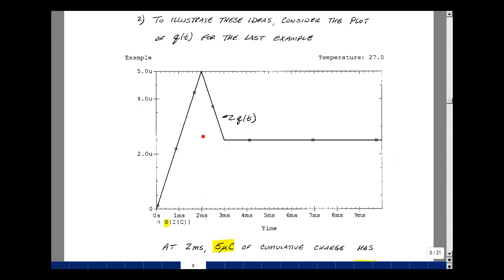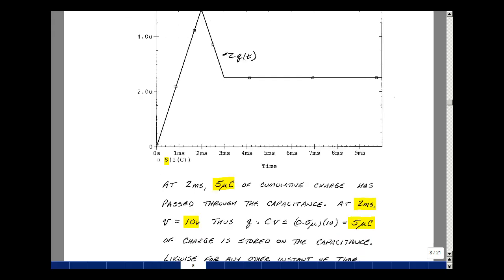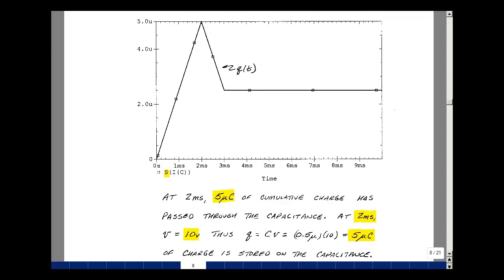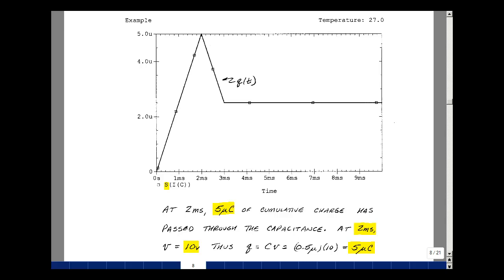At two milliseconds it says that I have five microcoulombs of charge has passed through our mathematical capacitance. Now if we calculate with our formula above the amount of charge that's stored on a capacitance, then at two milliseconds we found that the voltage previously was 10 volts, and so if you multiply 0.5 microfarads times 10 volts you get five microcoulombs. So this is the amount of charge that's stored on the capacitance, but it's also the amount of charge that's passed through the capacitance. Again, in a mathematical sense, it's a little bit different physically.